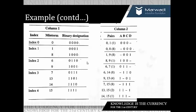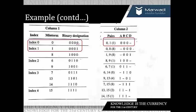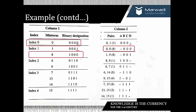Our next task is to pair the successive groups and obtain column 2. On comparing index 0 and index 1: comparing 0 and 1, there is a change in the LSB bit, so we write 000-. On comparing 0 and 8, there is a change in the MSB bit, so we write -000.